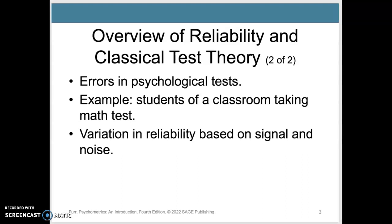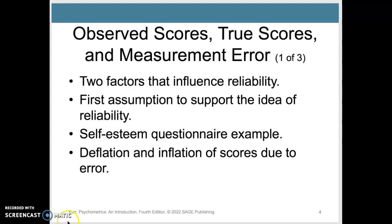Or maybe they take some lucky guesses — if you have a multiple choice test, for example, they might score even higher than their actual ability. So the idea is that you have an observed score that consists of the true score and the measurement error.